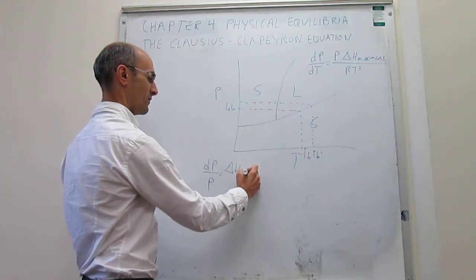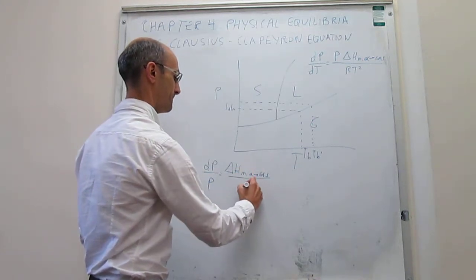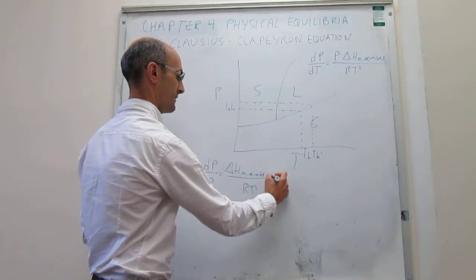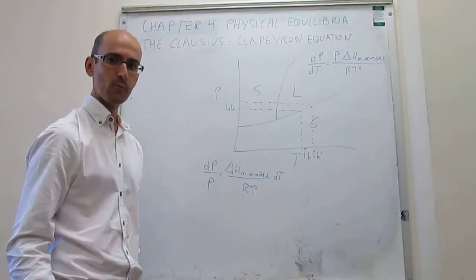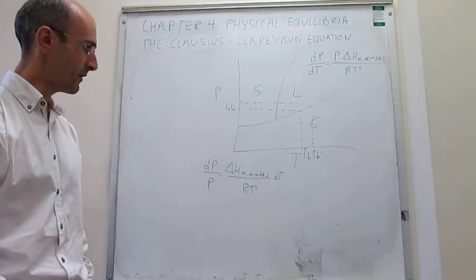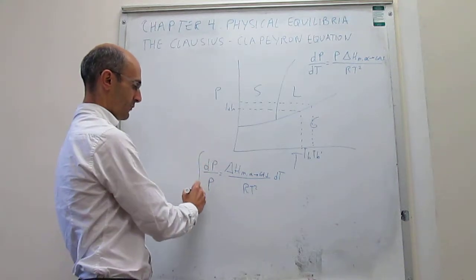over RT squared, multiplied by dT. This sets up our differential expression that we can integrate between the points of interest.